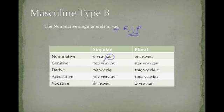Ho neanias, tou neaniou, again, our strange genitive ending. Tō neania, ton neanian.